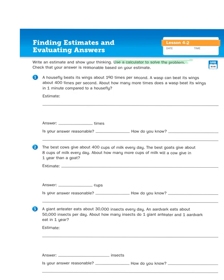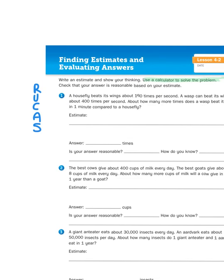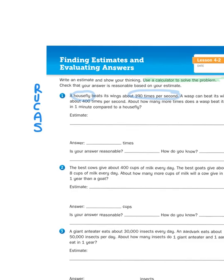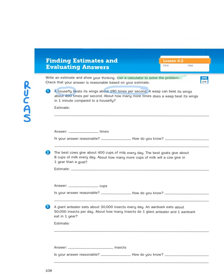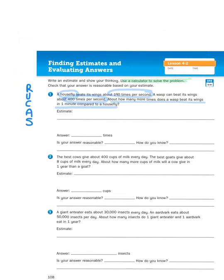A wasp can beat its wings about 400 times per second. About how many more times does a wasp beat its wings in one minute compared to a housefly? So what we're going to do here is we're going to use the RUCKUS strategy for problem solving, which is I'm going to read that problem more than once. I'm going to underline the question, circle important information, come up with an action plan, and then solve it.